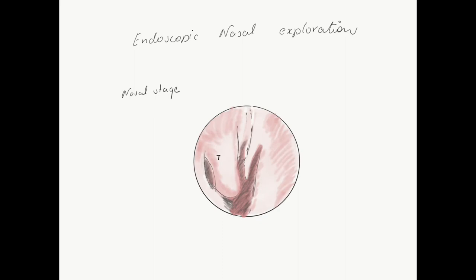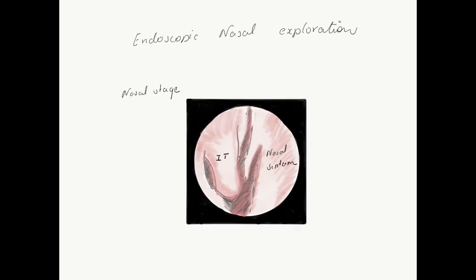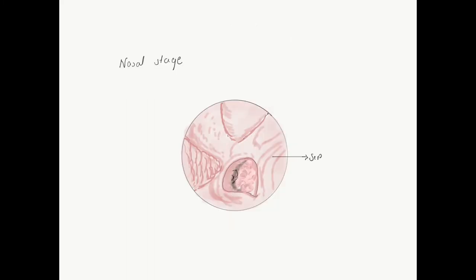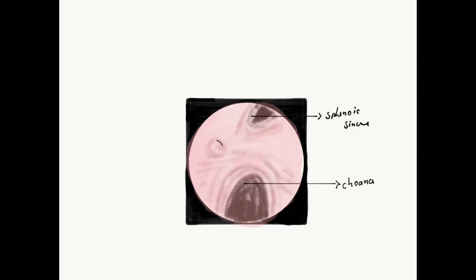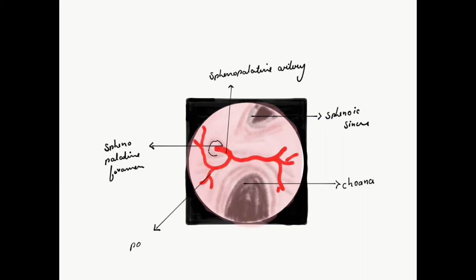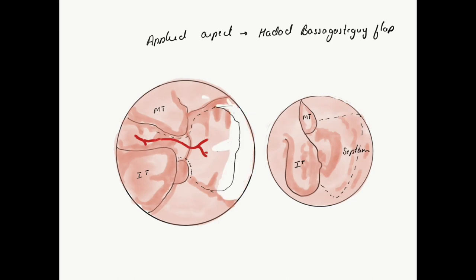Now I will quickly take you through the nose with an endoscope. As we enter the right nostril, we first see the inferior turbinate laterally and the nasal septum medially. As we further proceed, one can appreciate the choana, inferior and middle turbinate, and septum on the medial side. If we go above the choana, we will find the sphenoethmoidal recess, and about 1 to 1.5 cm above the choana one can appreciate the presence of the sphenoid ostium. At this level the sphenopalatine artery comes out of the sphenopalatine foramen and gives two branches: the posterior nasal branch supplying the turbinates and the nasopalatine branch supplying the septum.